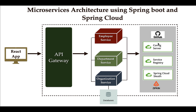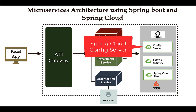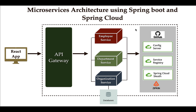Next, we will implement a config server to externalize the configuration files of all three microservices into a central place — a Git repository. Spring Cloud provides the Spring Cloud Config module that we can use to implement the config server. We are going to use a Git repository as the storage for the config server.